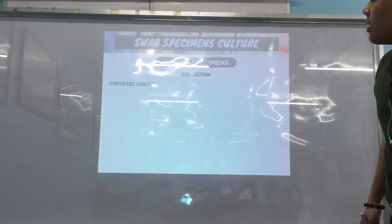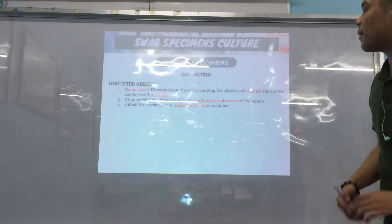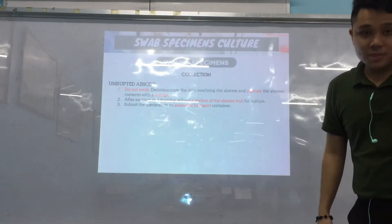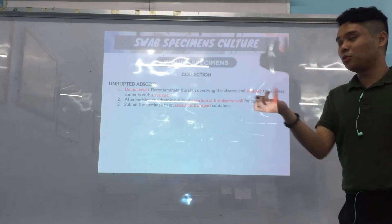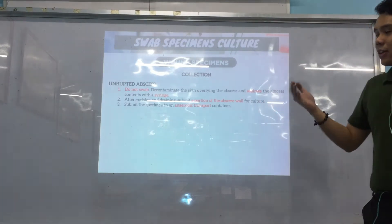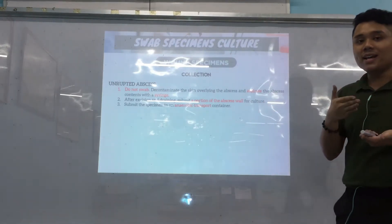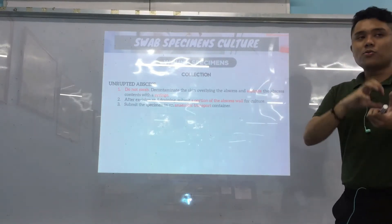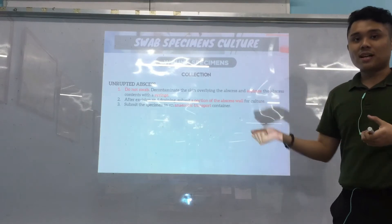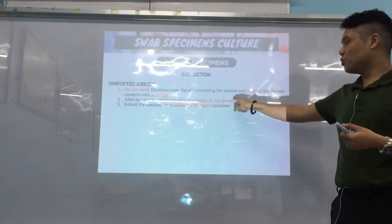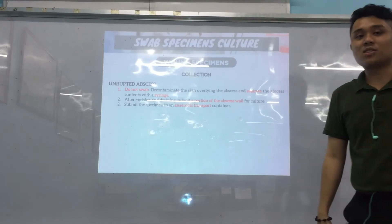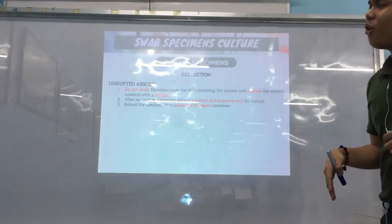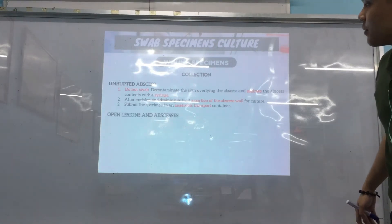For the collection method with an unruptured abscess, you do not swab it because we are looking for anaerobes. The abscess is excised — opened — then drained, and the fluid is collected in an anaerobic transport medium. A portion of the abscess wall is also collected, since we're looking primarily for anaerobes.